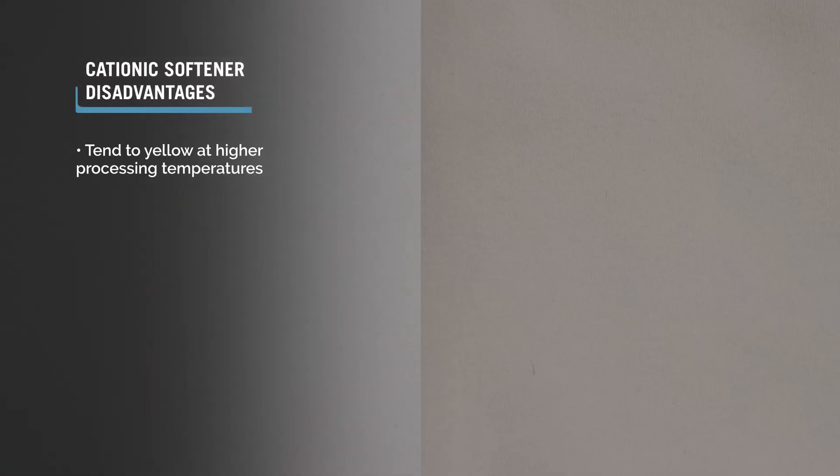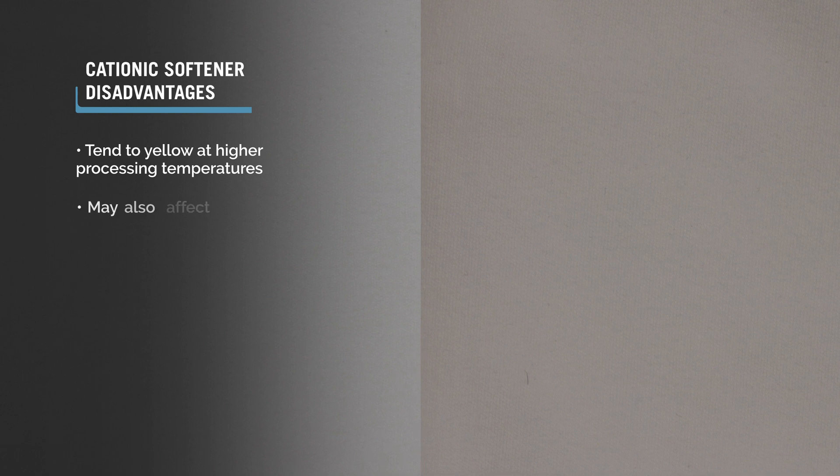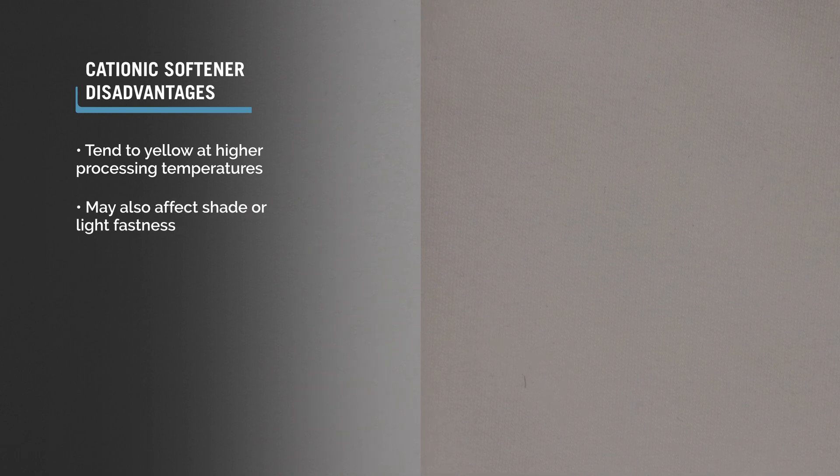Drawbacks: Cationics are not used at high levels on white because they tend to yellow at higher processing temperatures. They may also affect shade or light fastness.